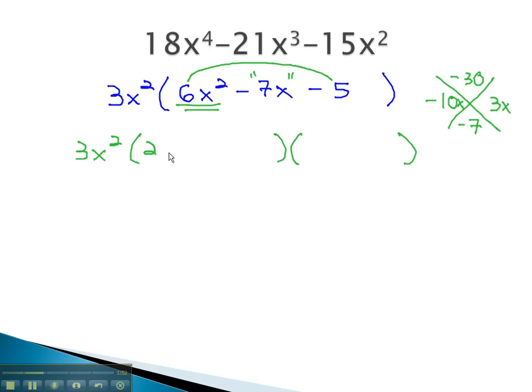Another way would be 2x times 3x. Notice we can factor 2x out of the negative 10x and 3x out of the 3x, so this pair should work.